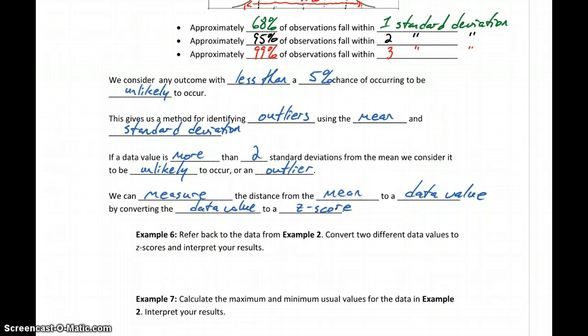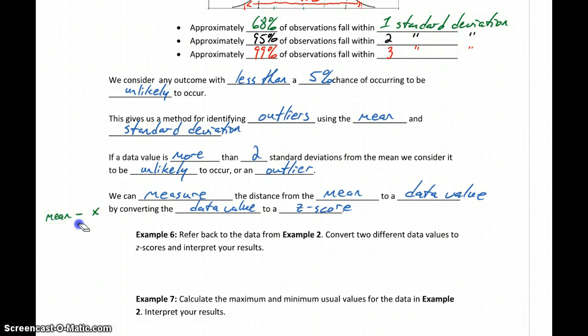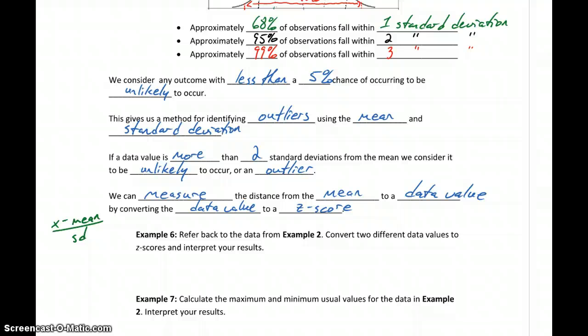There's a simple formula for doing that. Once we know the mean, the standard deviation, and our data value, we take our data value, subtract the mean, and divide by the standard deviation. We'll also look at a tool available in the MLP course on the module 3.2 page that will take care of those calculations, just to make the process a little easier in case you don't have a calculator on hand.